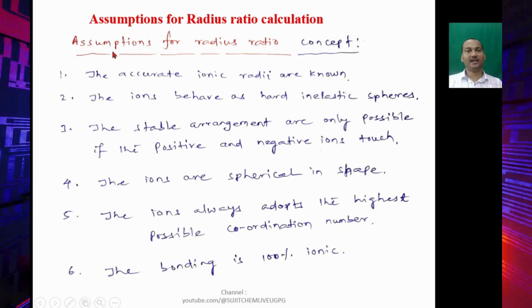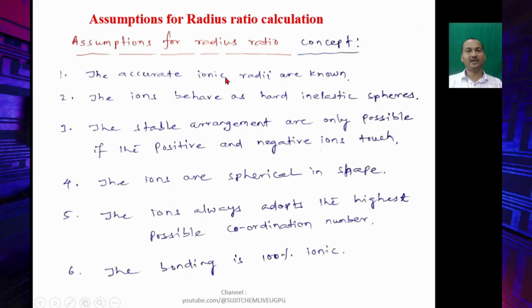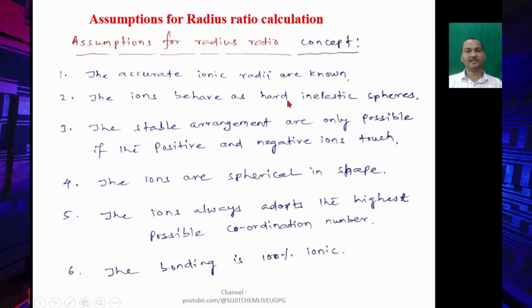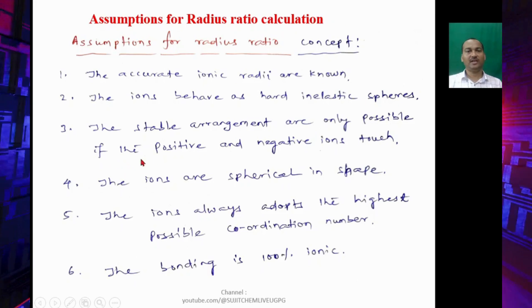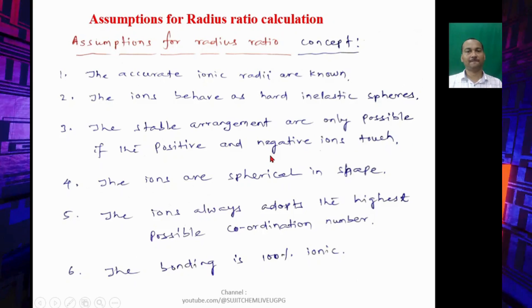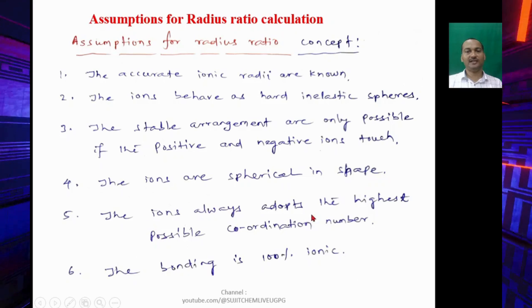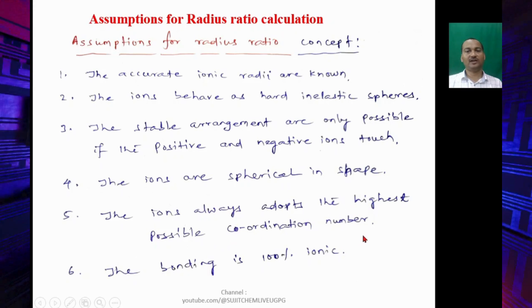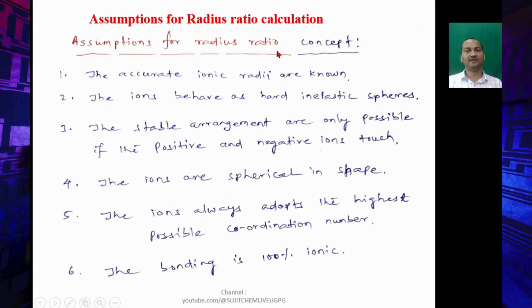There are some assumptions for radius ratio calculation. First, the accurate ionic radii should be known. The ions behave as hard inelastic spheres and the stable arrangements are only possible if the positive and negative ions touch each other. The ions are spherical in shape and the ions always adopt the highest possible coordination number, and the bonding is 100% ionic.